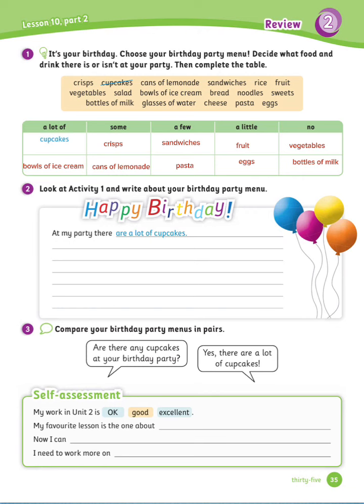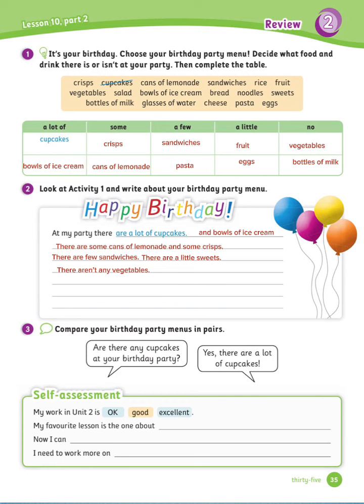Exercise number 2: Look at Activity 1 and write about your birthday party menu. At my party, there are a lot of cupcakes and bowls of ice cream. There are some cans of lemonade and some crisps. There are a few sandwiches. There are a little sweets. There aren't any vegetables.